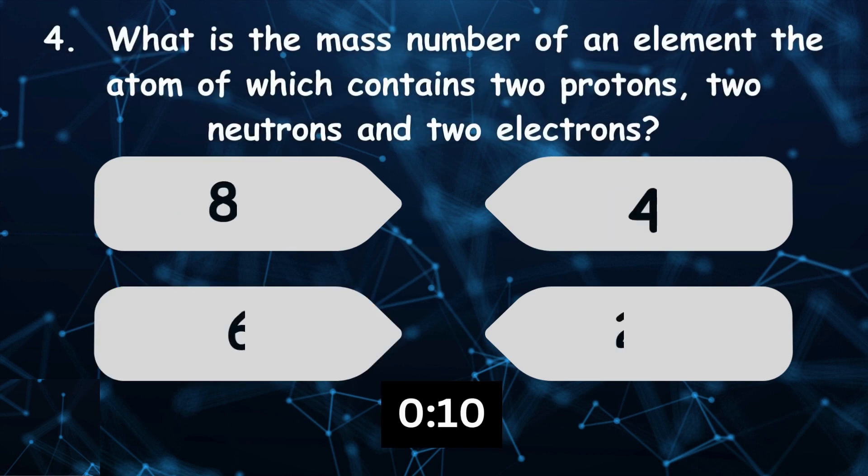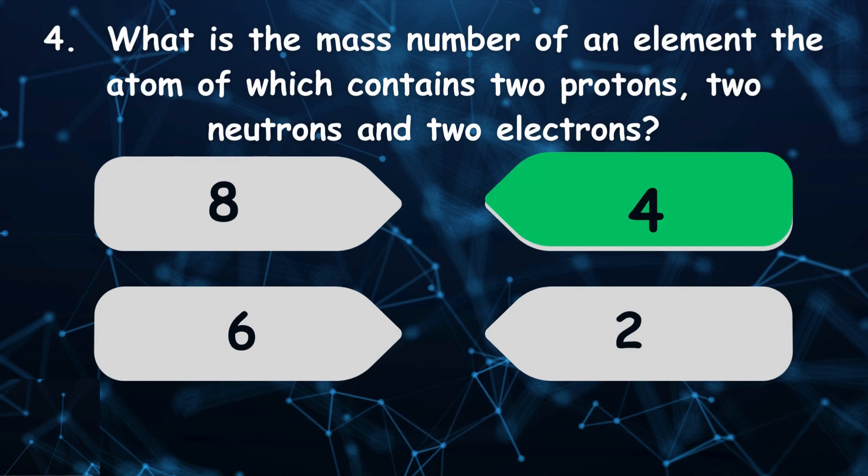What is the mass number of an element, the atom of which contains two protons, two neutrons and two electrons? The answer is four.